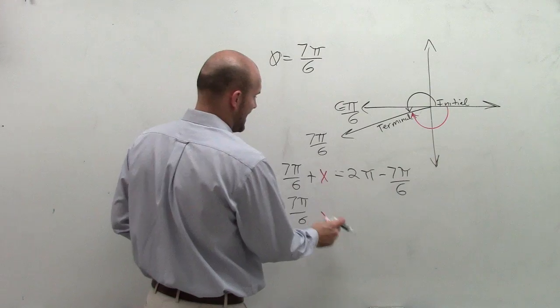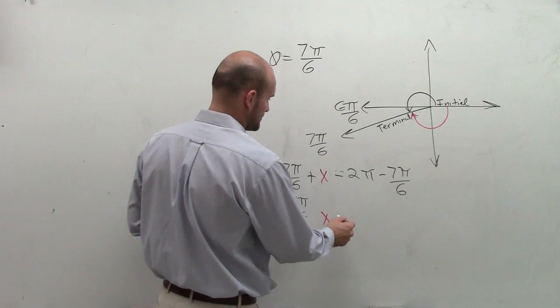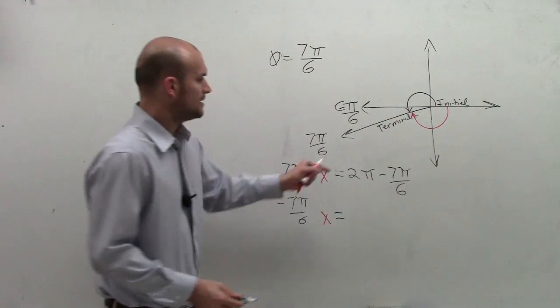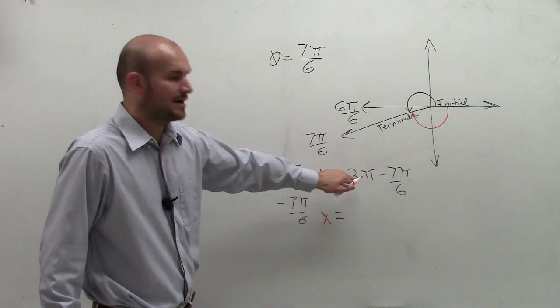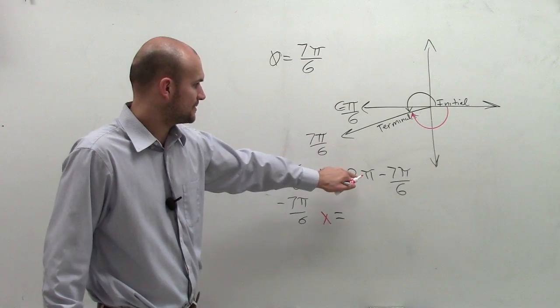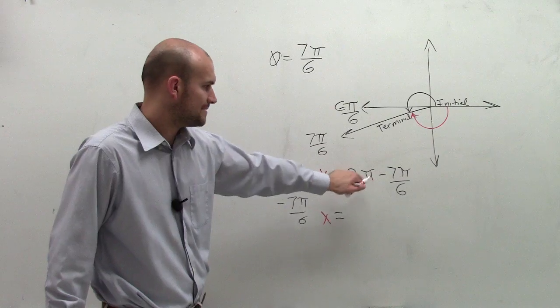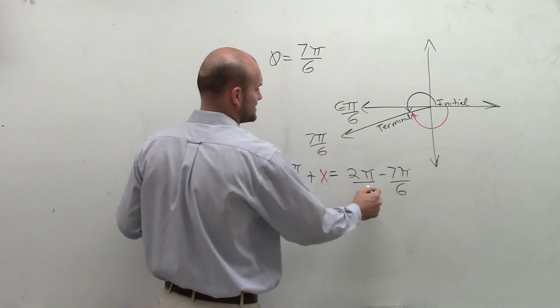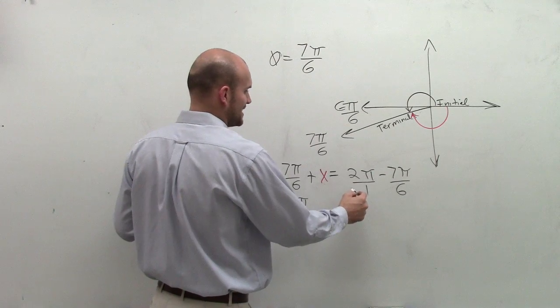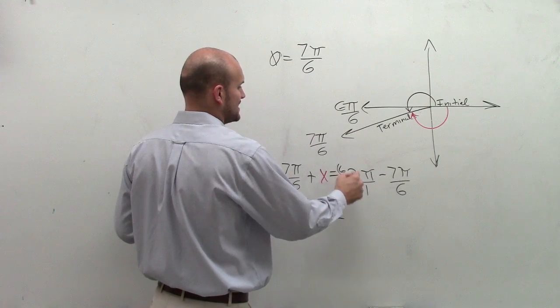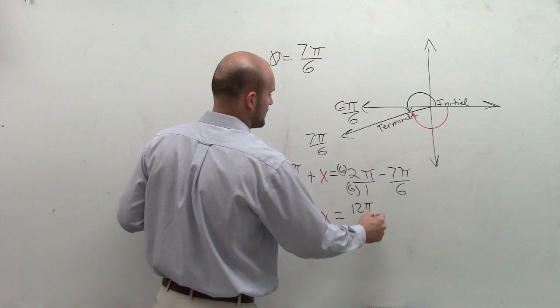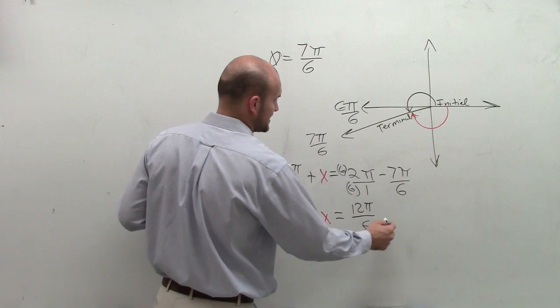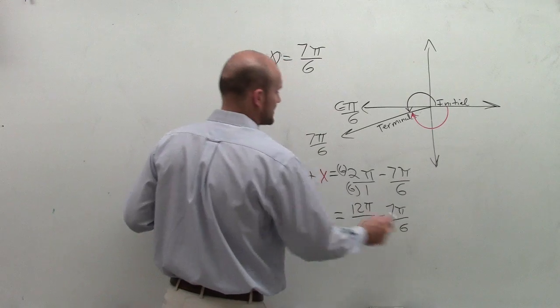So therefore, x equals, now remember, to subtract these, you've got to make sure that you have them the same denominator. So to subtract 2π over 6, I've got to get this as a denominator of 6. So I have 12π over 6 minus 7π over 6.